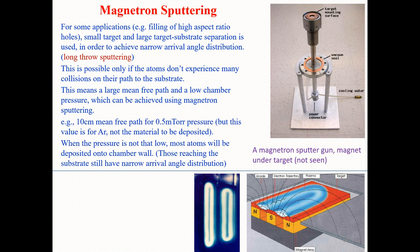For example, a 10-centimeter mean free path can be achieved at 0.5 millitorr pressure. By utilizing magnetron sputtering for thin film deposition, we can get a large mean free path of 10 centimeters with a low pressure of 0.5 millitorr.